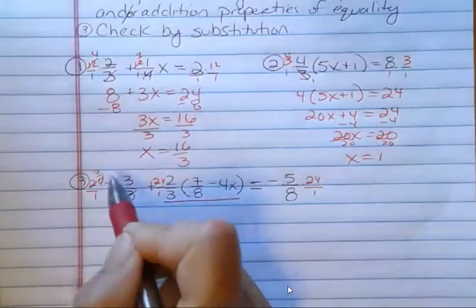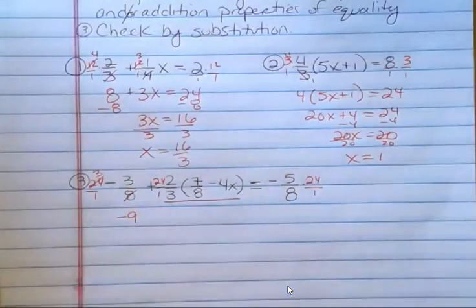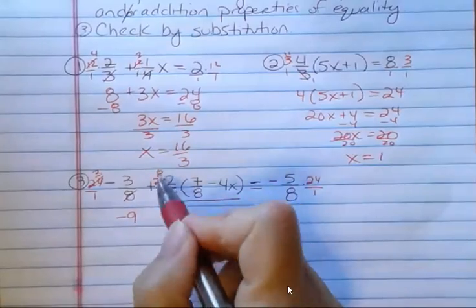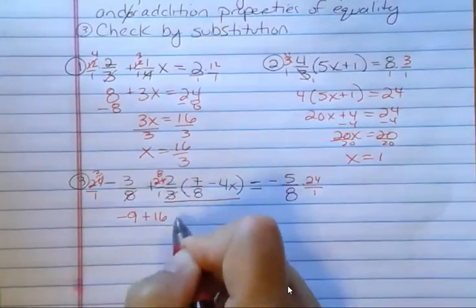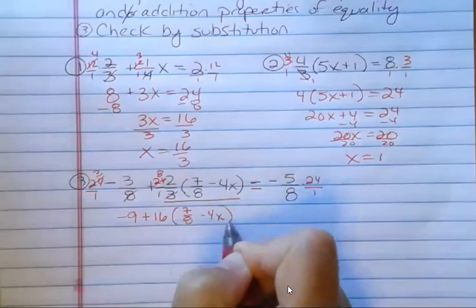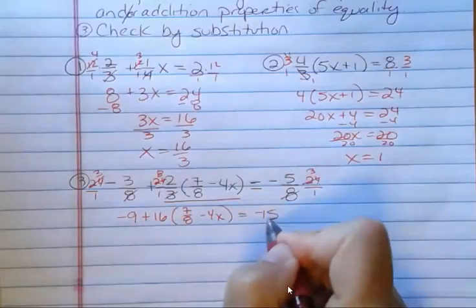8 goes into 24 3 times. 3 times negative 3 is negative 9. 3 goes into 24 8 times. And 8 times 2 is 16.